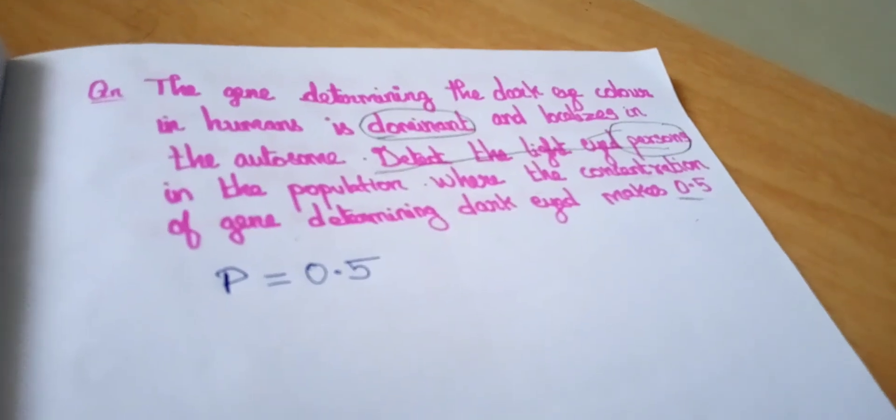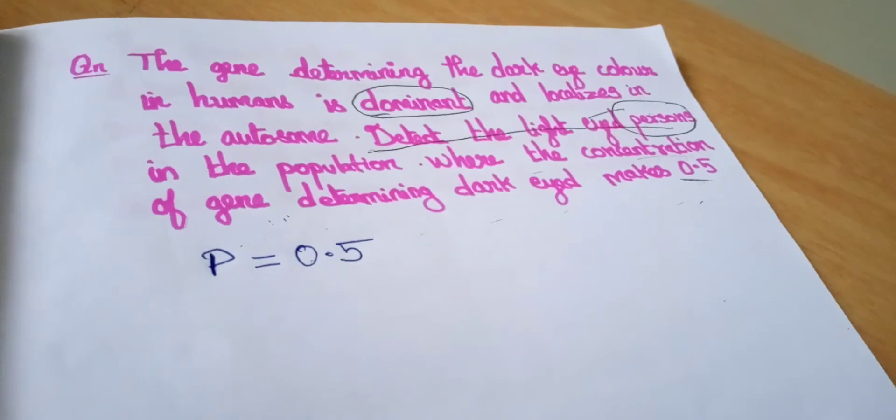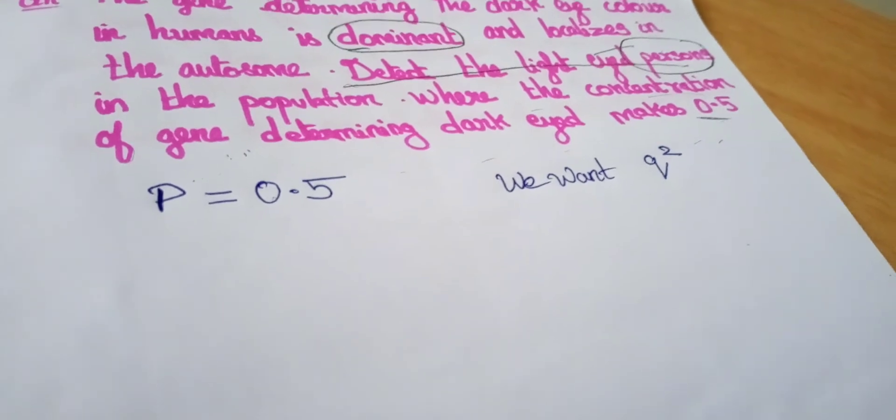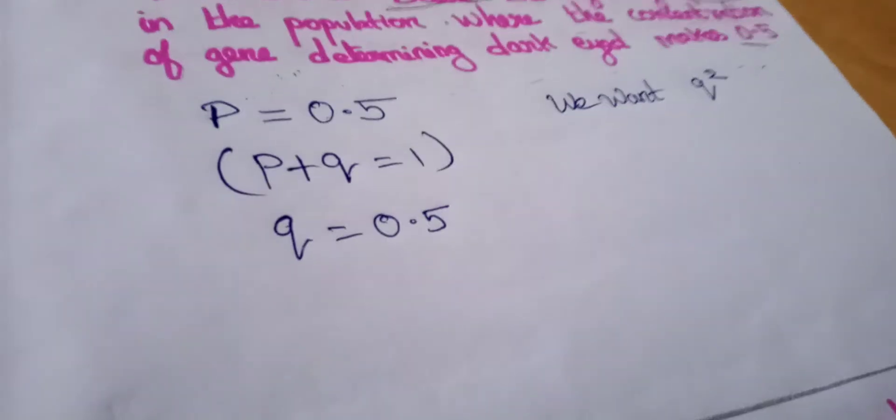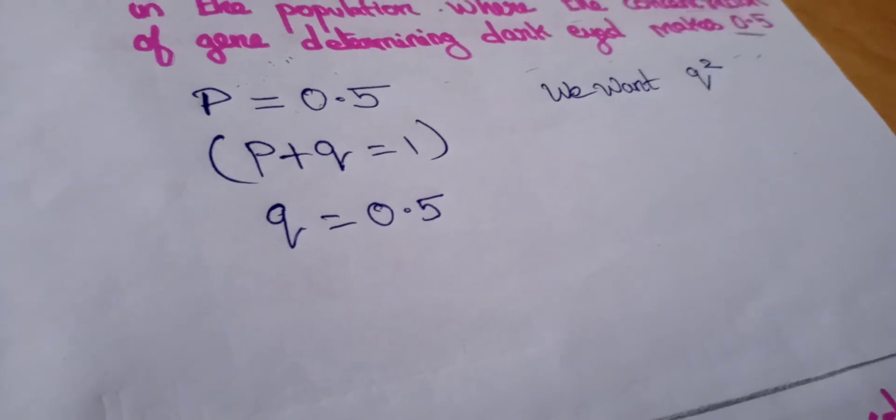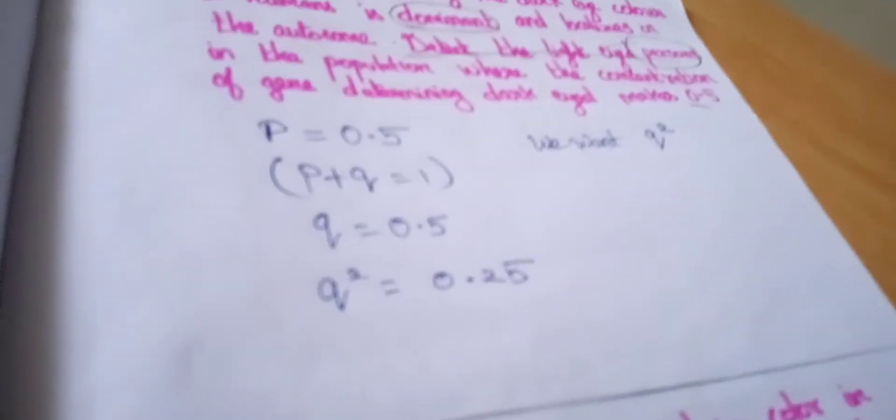We want light-eyed persons. So Q square for persons. We want the Q square. We should find Q first. From the formula P + Q = 1, P is 0.5, we find Q equals 0.5. Then Q square equals 0.25, which is 25%.